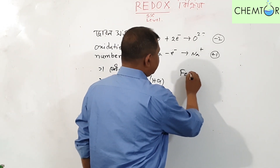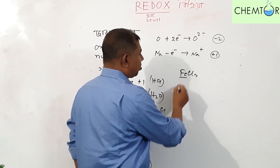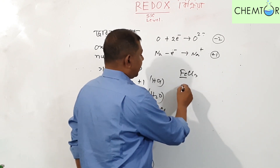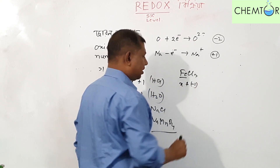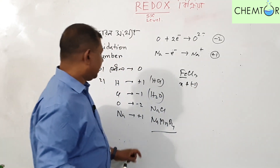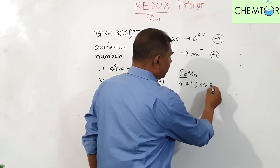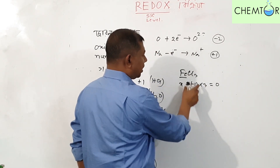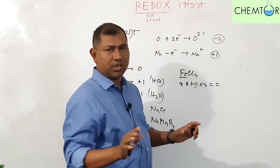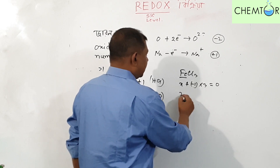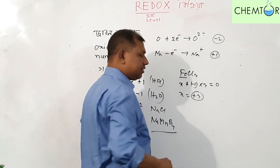We have FeCl3 — this is ferric chloride. When iron is used, we solve for x. Chlorine is minus 1, and there are 3 chlorines, so x plus 3 times minus 1 equals 0. Therefore, iron is plus 3.